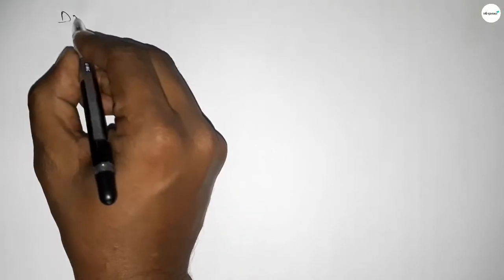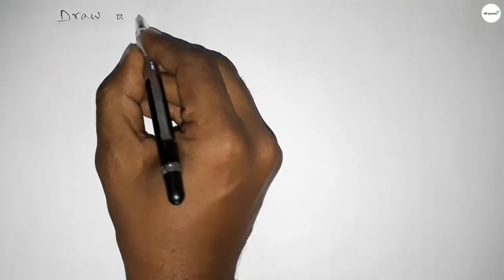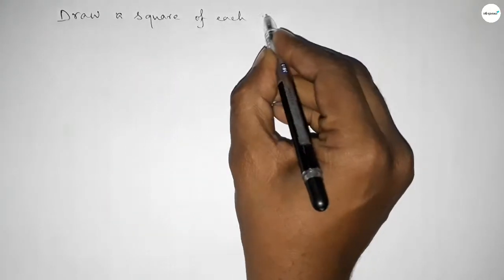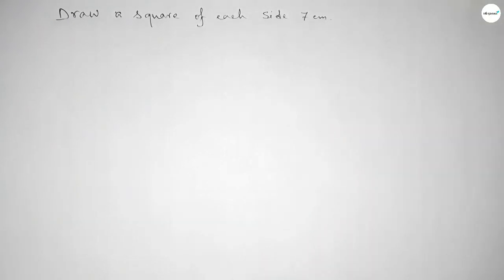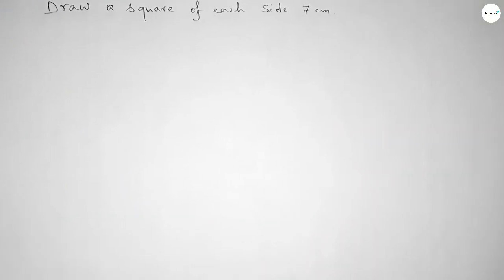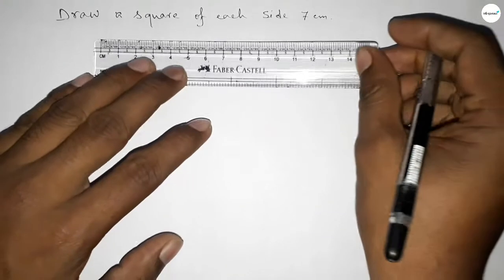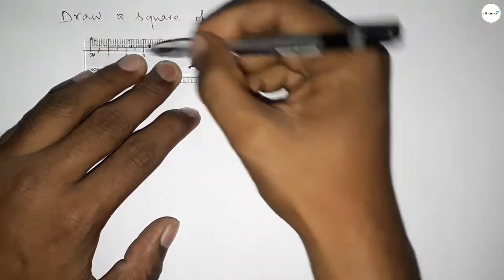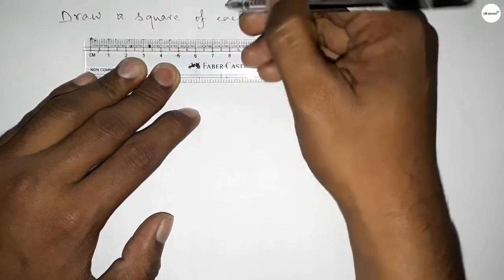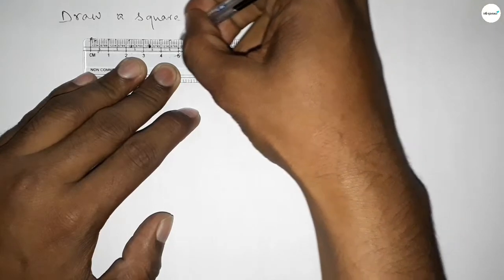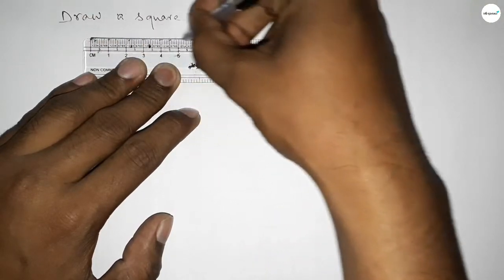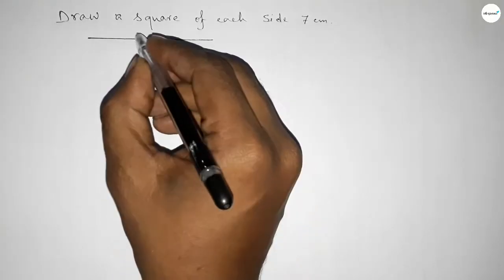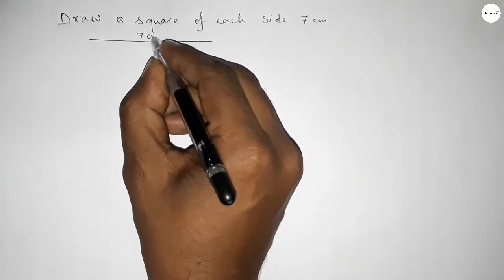Hi everyone, welcome to SSR Classes. Today in this video we have to draw a square of each side 7 centimeters. So let's start the video. First of all, drawing here a length of 7 centimeters — this is 0, 1, 2, 3, 4, 5, 6, 7 — so this is 7 centimeters.